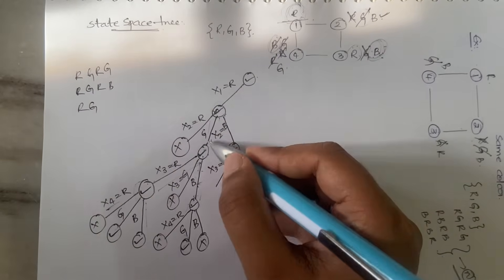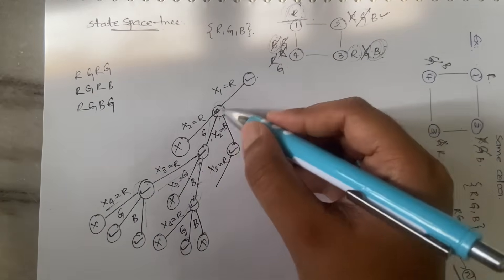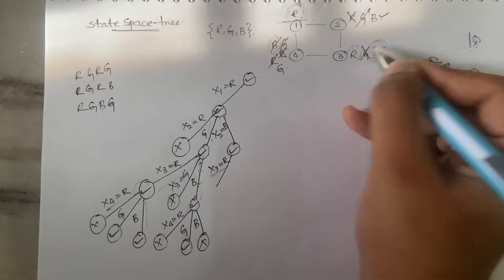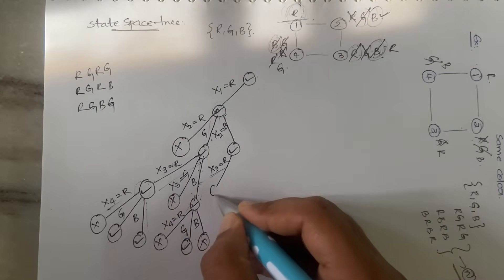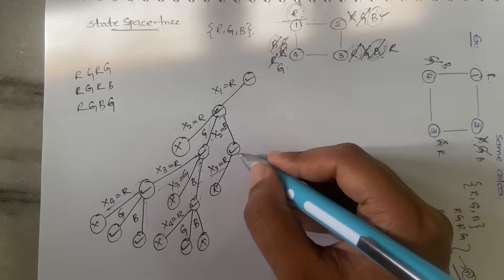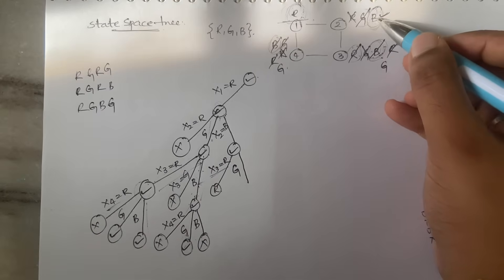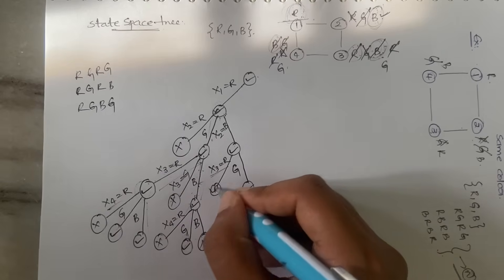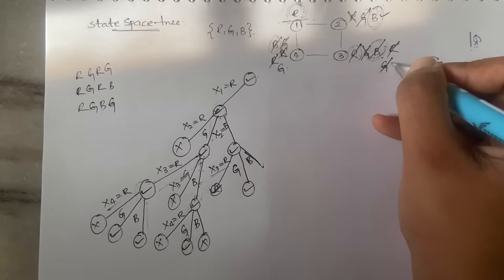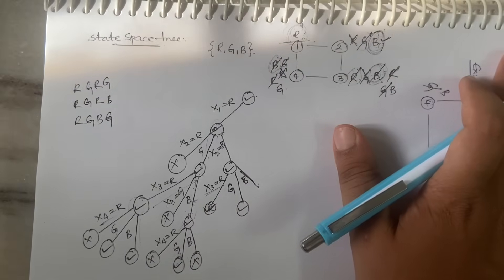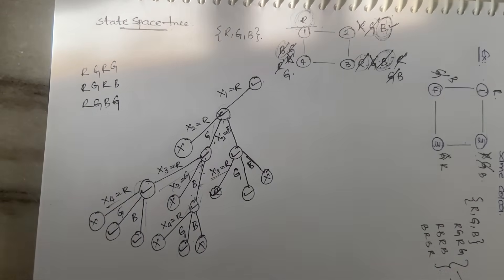Yes, x3 = red is accepted because x2 has blue and blue is adjacent — you can happily place red next to blue. Now checking x4: can you take green? Yes, green is accepted because x2 has blue. Can you take blue? No — x3 is already blue adjacent, so blue is not accepted; this becomes a dead-end node.